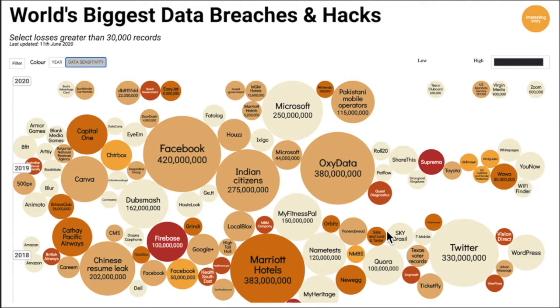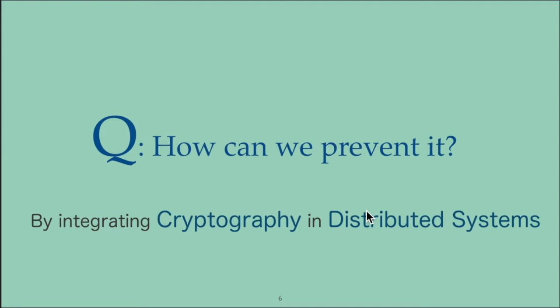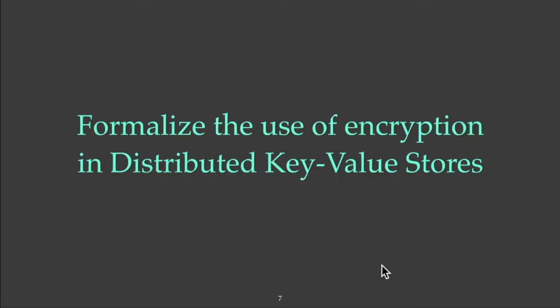These days what we are seeing is that these systems are getting breached on a regular basis. For example, there was a breach at Facebook that leaked photographs, a breach at Capital One which leaked credit card and social security numbers, and a breach at Quest Diagnostics which leaked health records. This is very serious. So the question is, if I'm storing sensitive data in these systems and I want to prevent these breaches, what can I do? One solution is to use cryptography, which is one of the best tools we have to prevent certain kinds of data breaches, and we can integrate cryptography into these existing systems.